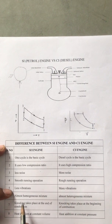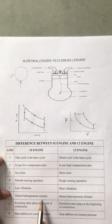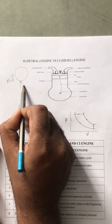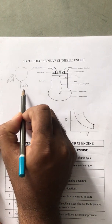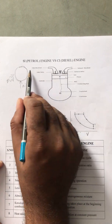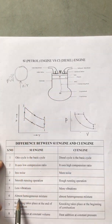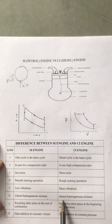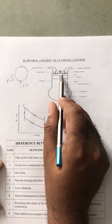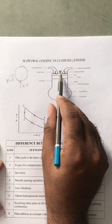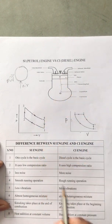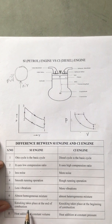In the SI engine, an almost homogeneous mixture is formed because air from the atmosphere and fuel from the tank mix in the carburetor itself and enter the cylinder as a single composition - a homogeneous mixture. In the diesel engine, an almost heterogeneous mixture forms because at the end of the compression stroke we inject the fuel, meaning there is no homogeneity.